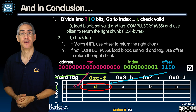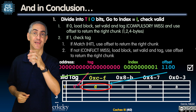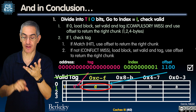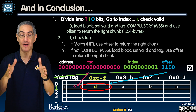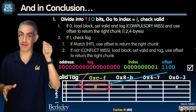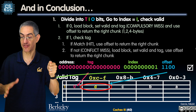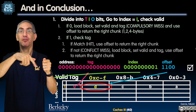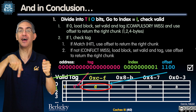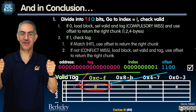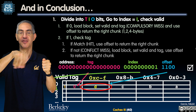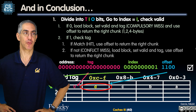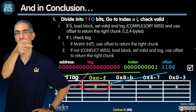So next lecture — cache series four — we're going to see an example, a demo, and talk about what that intermediate associativity is called: not fully associative and not direct mapped. Who lives in that fly-over area between fully associative and direct mapped? We'll see you next time.